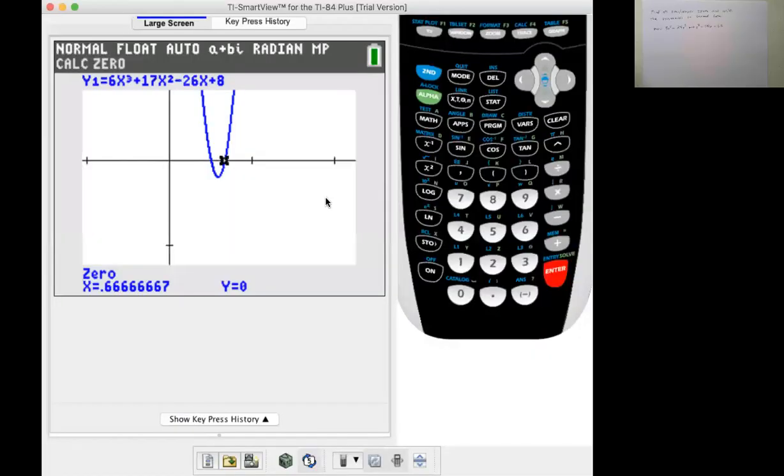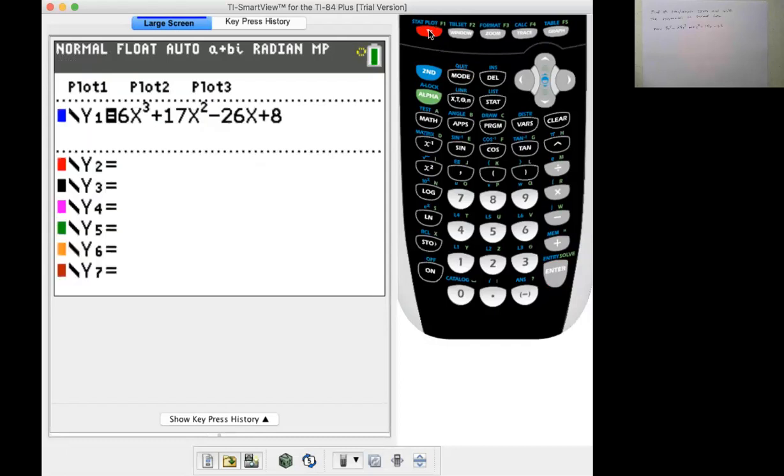So I'm going to go ahead and go to the graphing calculator and plug that equation in. So I have 3x^4 - 29x^3 + 101x^2 - 119x - 52.